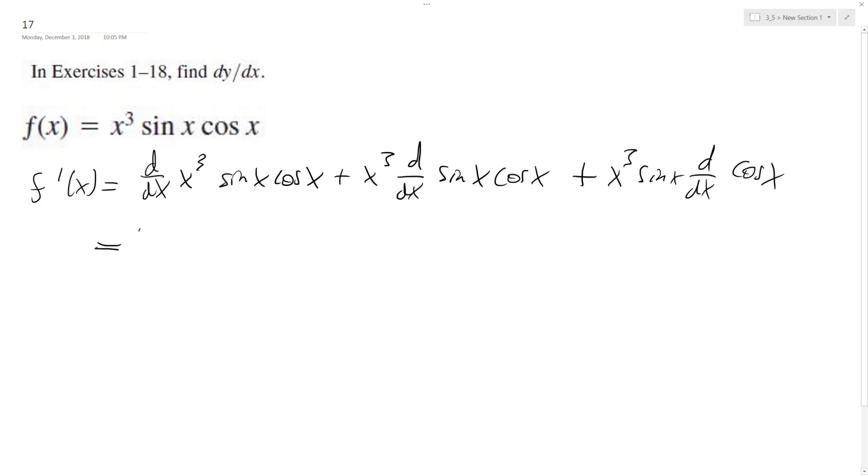So what we end up with here is 3x squared sine x cosine x plus x cubed cosine x.